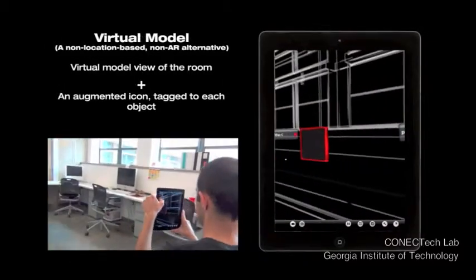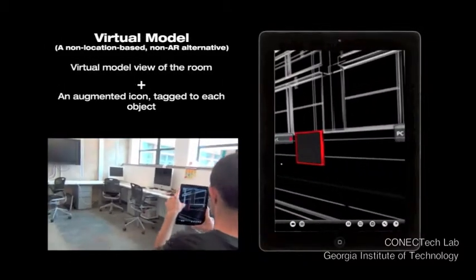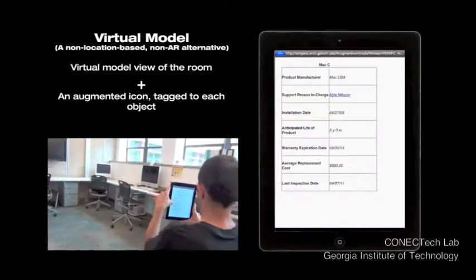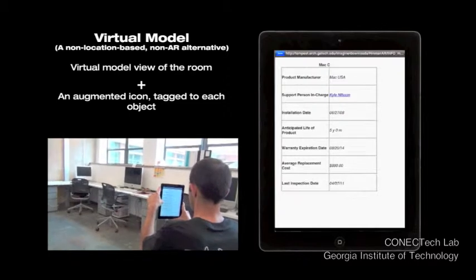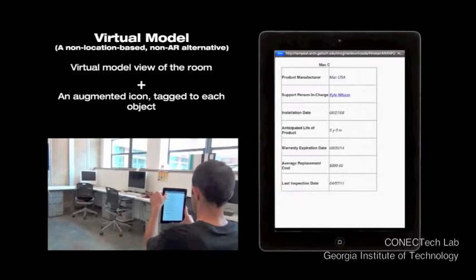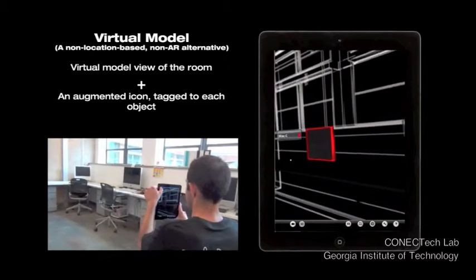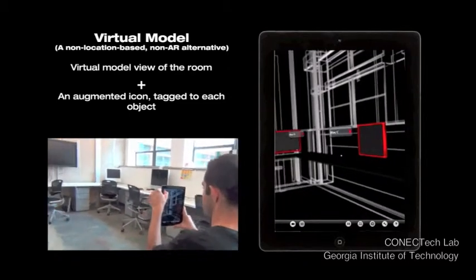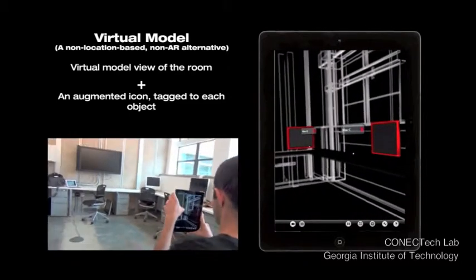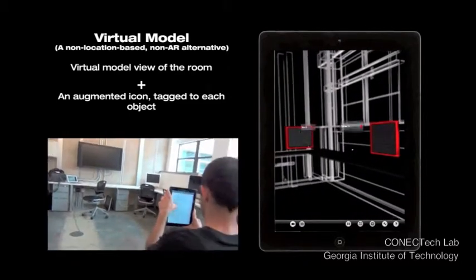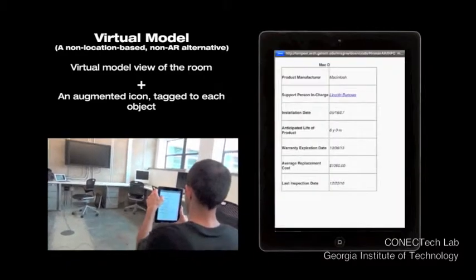In the virtual model, the user was able to geo-reference each of the objects and find information about each using the same procedure with the virtual tags.